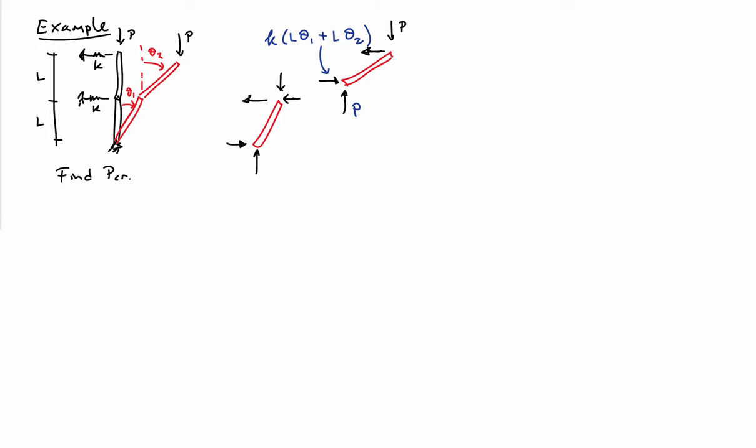Moving to the bottom piece, by Newton's third law the vertical force at the top of the bottom piece also equals P. The horizontal reaction due to the pin at the top location of the bottom piece is also equal to K times (L theta 1 plus L theta 2). There's also an additional force at the top pin of the bottom piece — the force due to the spring, which is K times its motion, L theta 1. The vertical force at the lowest pin equals P for vertical equilibrium, and horizontal equilibrium at the bottom pin gives K times (2L theta 1 plus L theta 2), balancing the horizontal forces at the top of the bottom piece. That completes the free body diagram for the two rigid links.